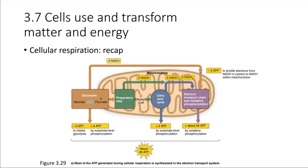To recap the full process: we start with one molecule of glucose, glycolysis splits it in half to make two pyruvates, pyruvate goes through the preparatory step and becomes acetyl-CoA, acetyl-CoA enters the citric acid cycle, and then the electron shuttle molecules NADH and FADH₂ head to the electron transport chain inside the mitochondria, helping ATP synthase make a large amount of ATP. In total, about 36 ATP molecules get produced from one starting glucose molecule.